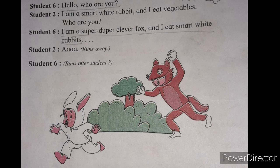Now here is the interaction between Student Six, who is the fox, and Student Two, who is the rabbit. Student Six says: 'Hello, who are you?' Student Two says: 'I am a smart white rabbit and I eat vegetables — who are you?' Student Six says: 'I am a super duper clever fox and I eat smart white rabbits!' The rabbit gets scared, cries, and runs away — and Student Six, the fox, runs after him because he wants to eat the rabbit.